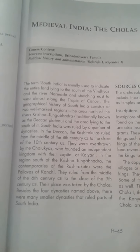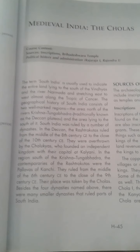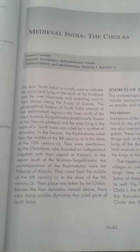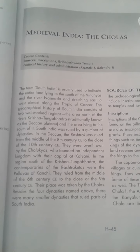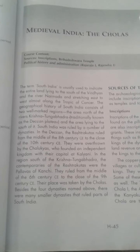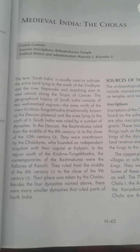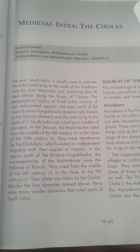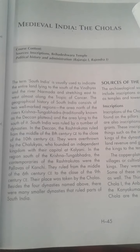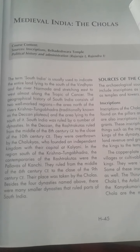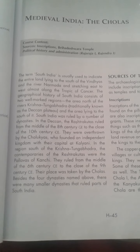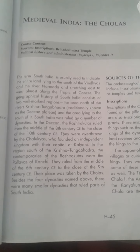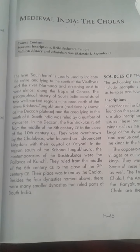The Cholas were the important dynasty of South India. South India covers the Vindhyas and River Narmada in the north and stretched from east to west along the Tropic of Cancer. The two well-known regions of South India were the area of the Krishna-Tungabhadra River and the area lying further south. The Krishna-Tungabhadra region was also known as the Deccan Plateau.